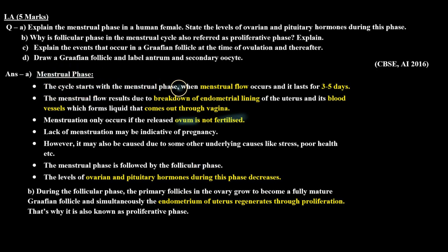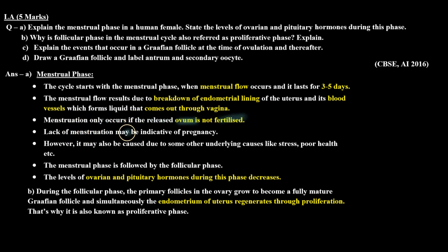The cycle starts with the menstrual phase when menstrual flow occurs and it lasts for 3–5 days. The menstrual flow results due to breakdown of the endometrial lining of the uterus and its blood vessels, which forms a liquid that comes out through the vagina. Menstruation only occurs if the released ovum is not fertilized. Lack of menstruation may be indicative of pregnancy; however, it may also be caused due to some other underlying causes like stress, poor health, etc. The menstrual phase is followed by the follicular phase. The levels of ovarian and pituitary hormones during this phase decrease.